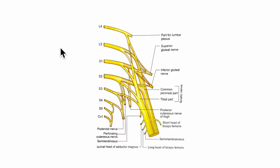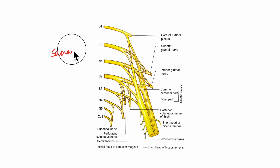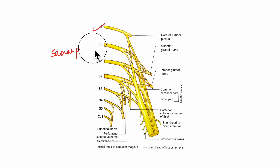Now let's look at its origin and root value. The sciatic nerve is the largest branch of the sacral plexus. Its root value is L4, L5, S1, S2 and S3.